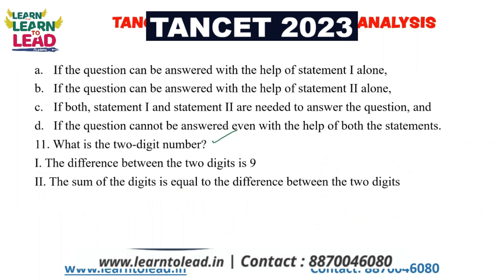What is the two-digit number? The difference between the 2 digits is 9. If there is any two-digit number where the difference between the digits is 9, you can find the number. So your answer is option A — using the first statement alone you can answer it.